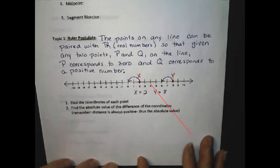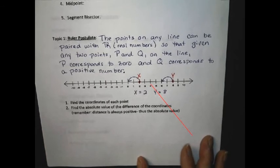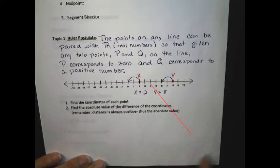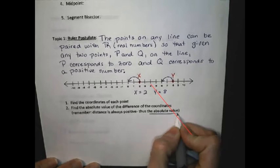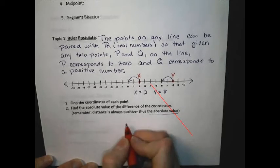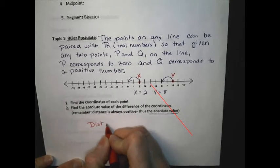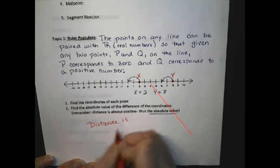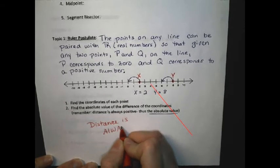To find the distance between the coordinates, we always use the absolute value. The reason we do that is because distance is always positive.